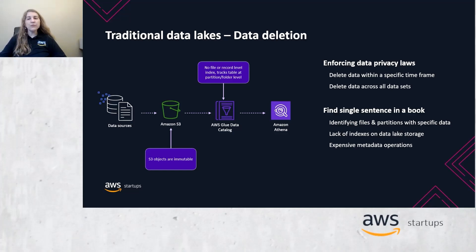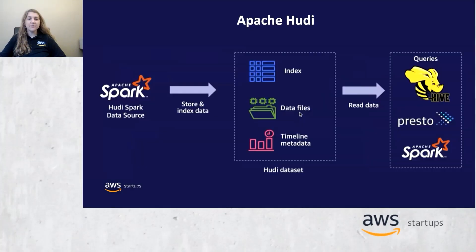Let's look at some open source frameworks that solve these challenges. Apache Hudi is an open source transactional data lake framework that greatly simplifies incremental data processing and data pipeline development by providing record level insert, update, upsert, and delete capabilities. You can use it to comply with data privacy regulations and simplify data ingestion pipelines that deal with late arriving or updated records from streaming data sources, or to ingest data using change data capture from transactional systems. Hudi is a platform with data and table services tightly integrated with the Hudi kernel, giving us cross-layer optimization, reliability, and ease of use.